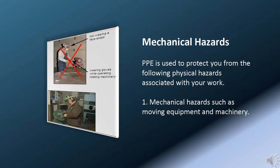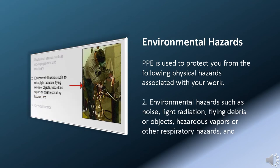PPE is used to protect you from the following physical hazards associated with your work: mechanical hazards, such as moving equipment and machinery; environmental hazards, such as noise, light radiation, and flying debris or objects; and hazardous vapors or other respiratory hazards.